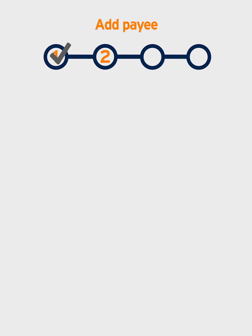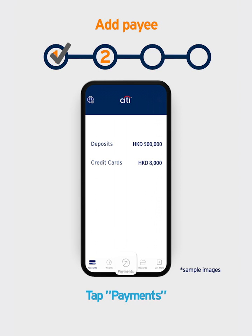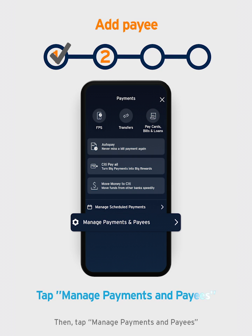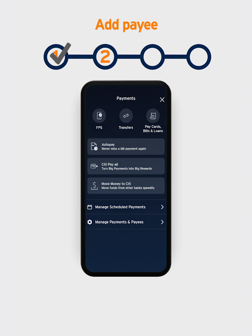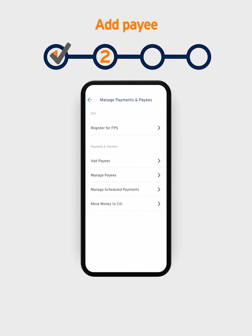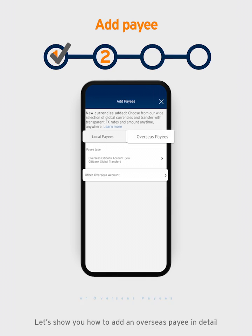Let's go! Log in to Citi Mobile App. Tap Payments, then tap Manage Payments and Payees, and then Add Payees. Here, you can add local payees or overseas payees. Let's show you how to add an overseas payee in detail.